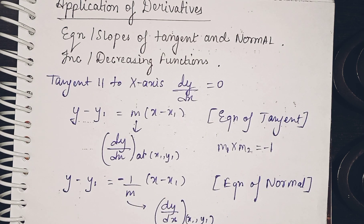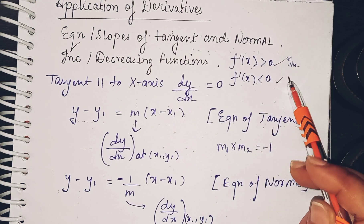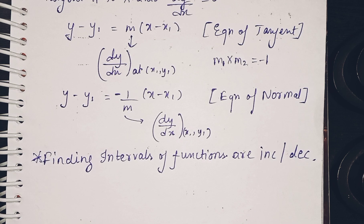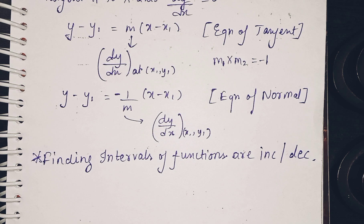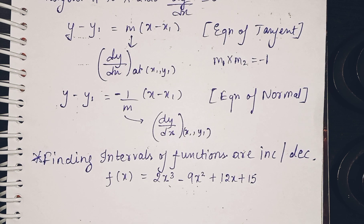For increasing and decreasing functions: a function is increasing when f'(x) > 0 and decreasing when f'(x) < 0. A question can be framed to find the intervals where a function is increasing or decreasing. For example: find the intervals in which the function f(x) = 2x³ − 9x² + 12x + 15 is increasing or decreasing. Solve this question and comment your answers below.